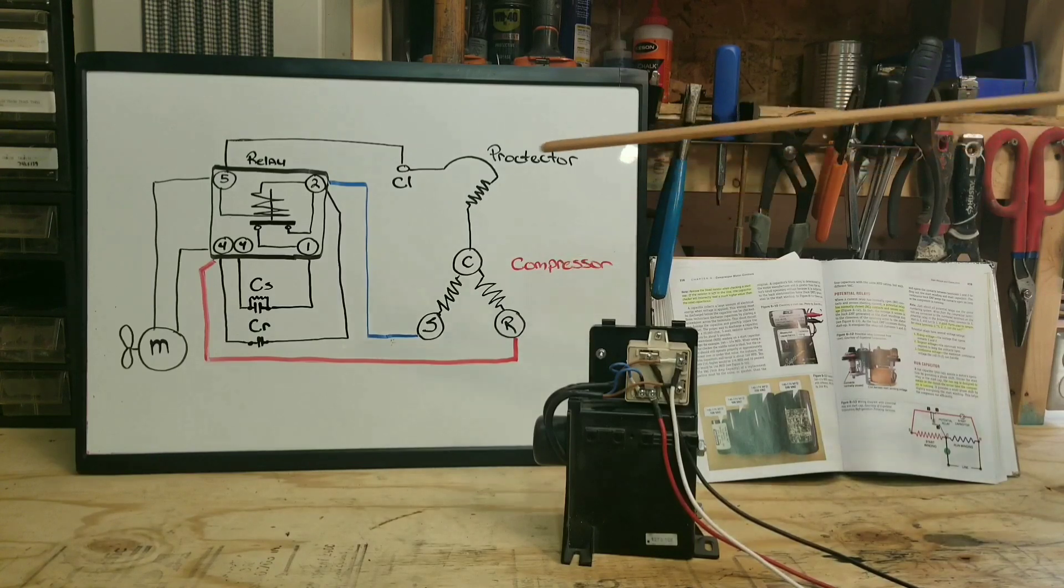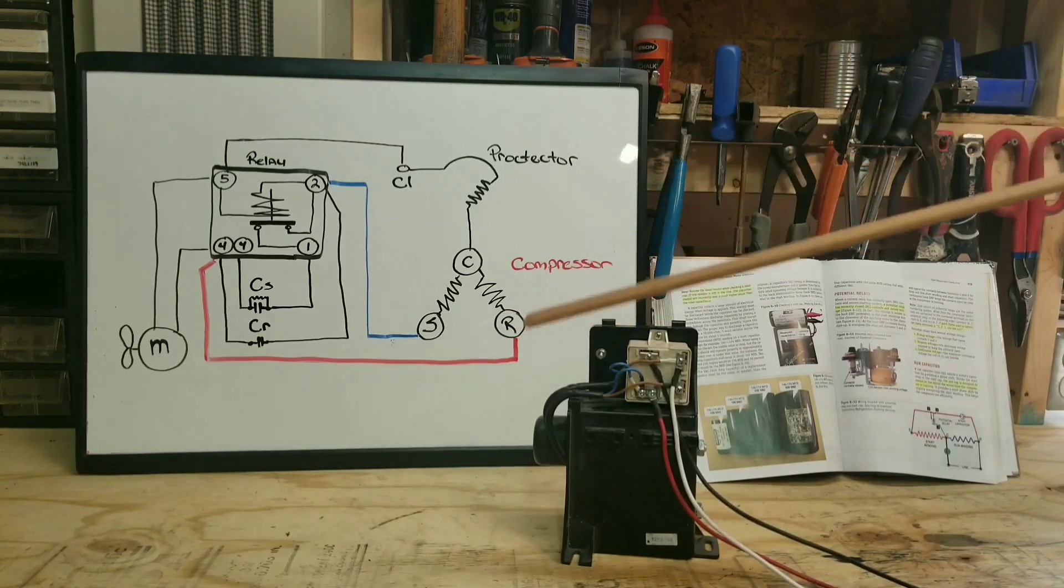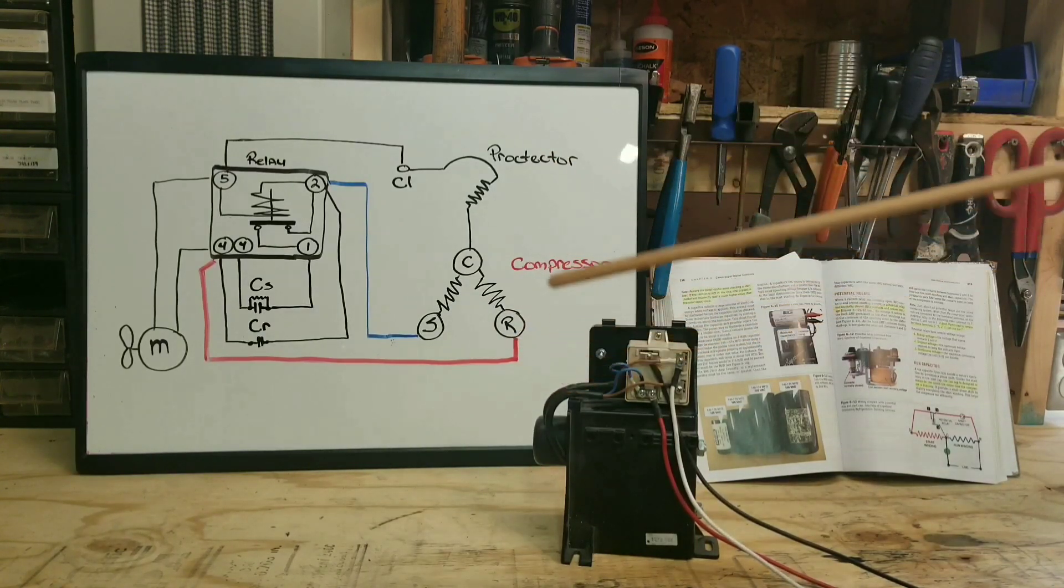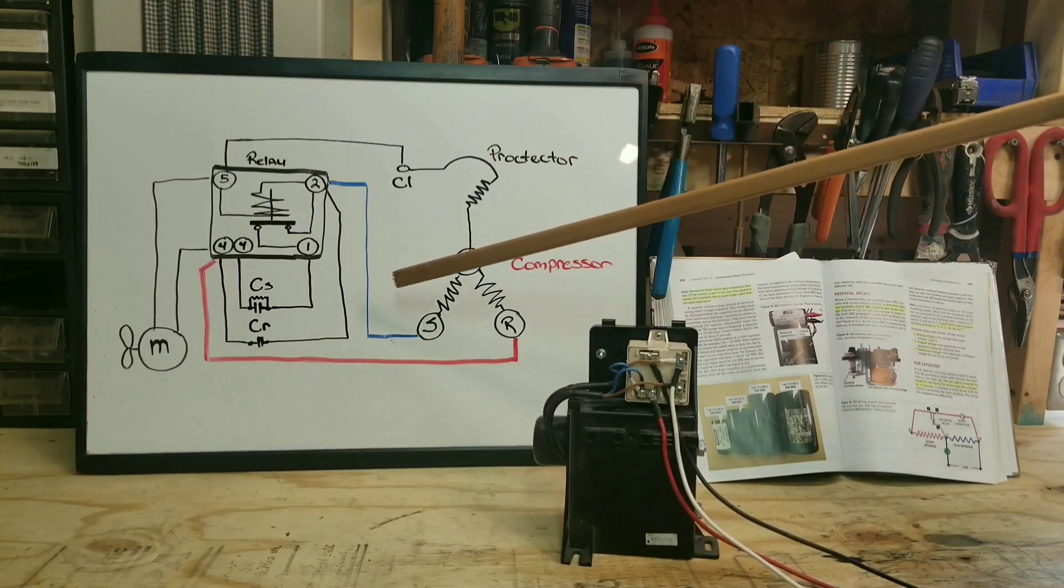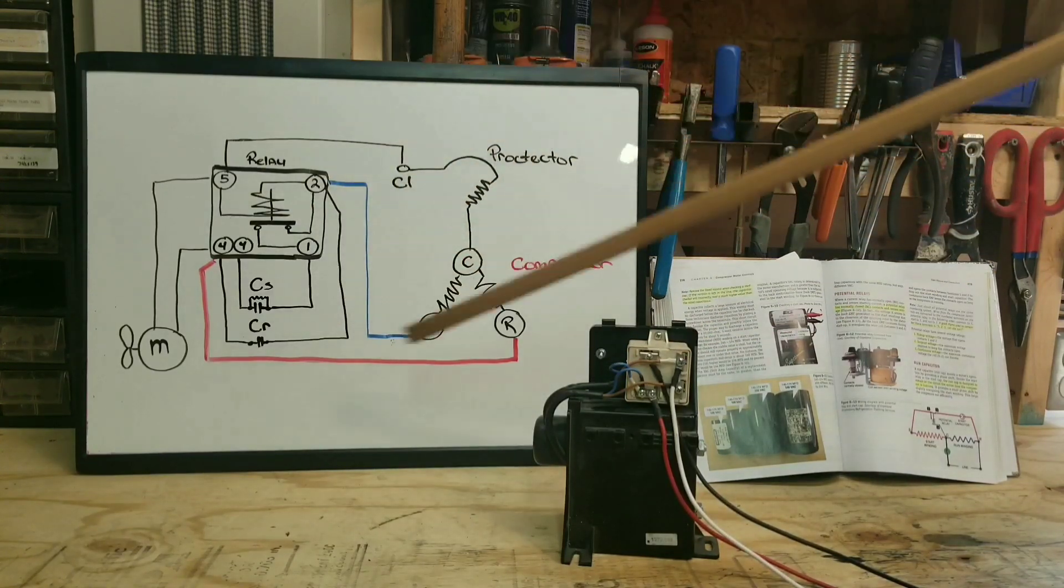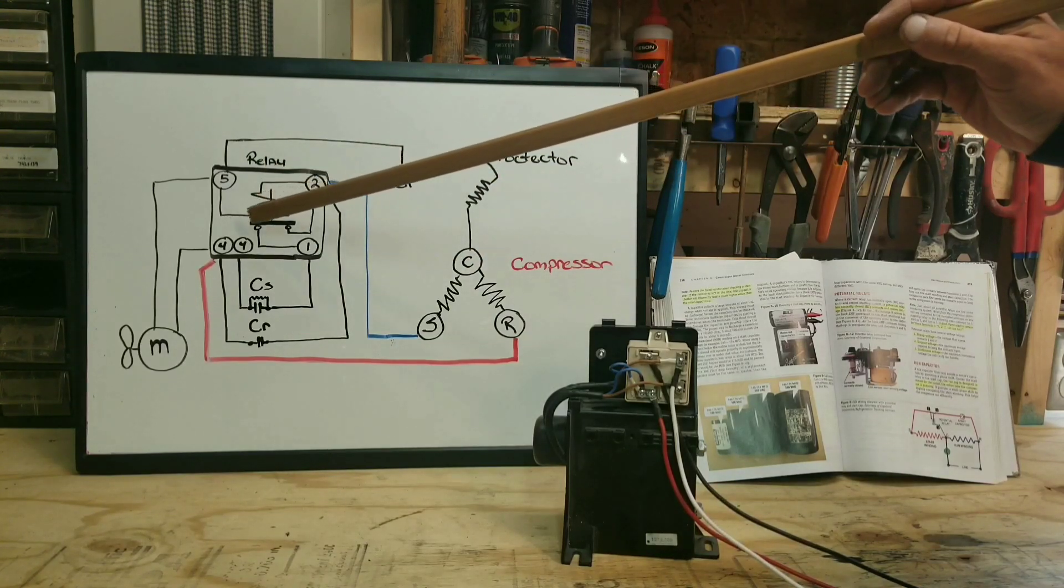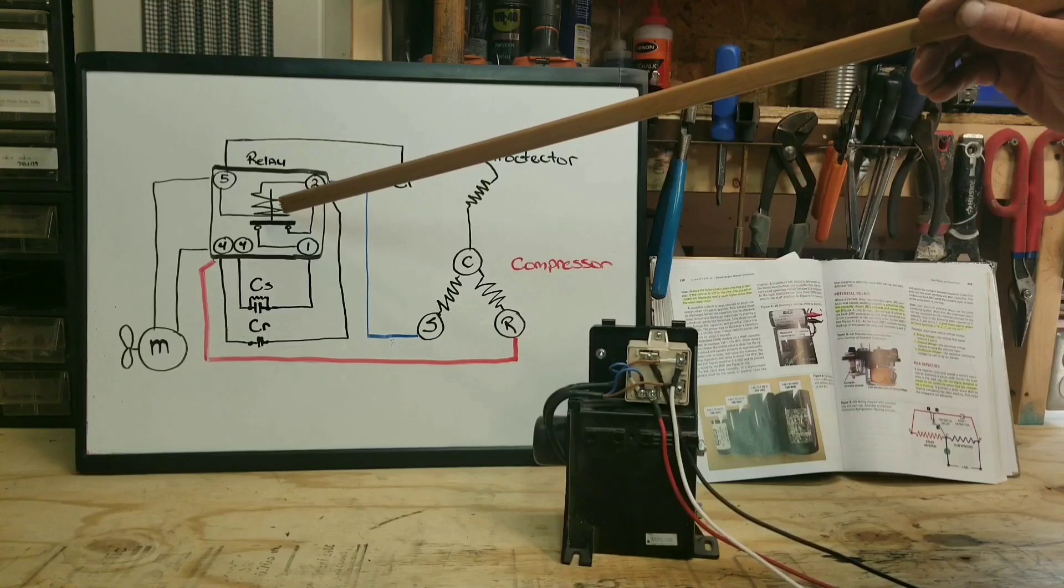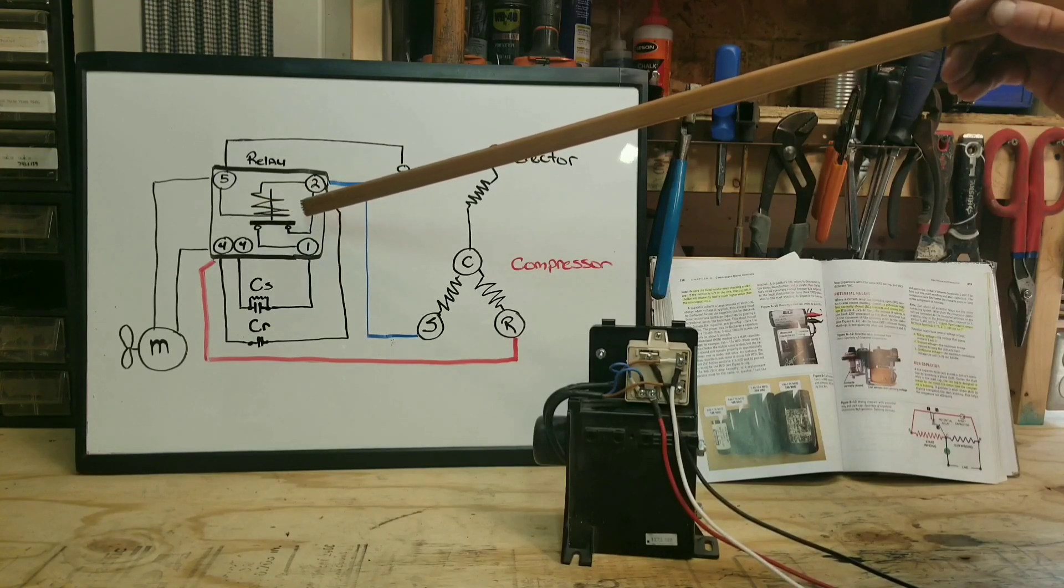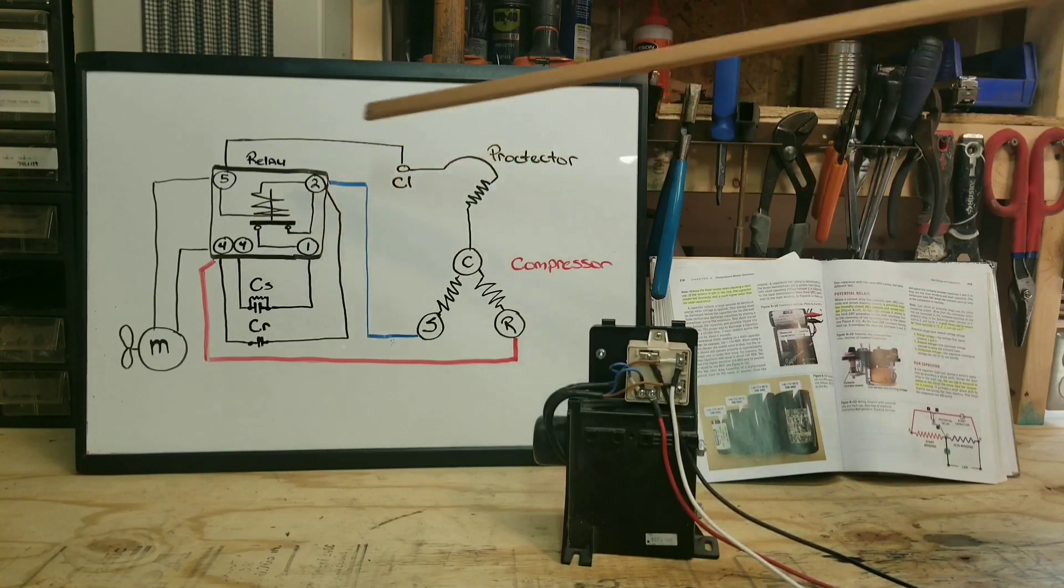So let's say it's been 20 minutes. Our compressor or our unit hits temperature and our compressor shuts off. Now we have no more power at this condensing unit, so this relay will go back down, back into its natural state, into its normally closed state, and it'll be ready for the next time we start up.